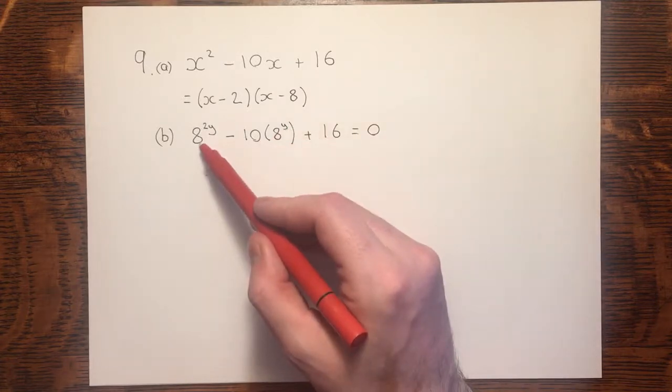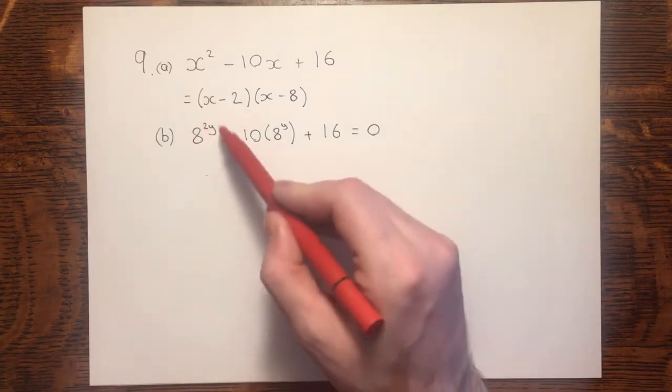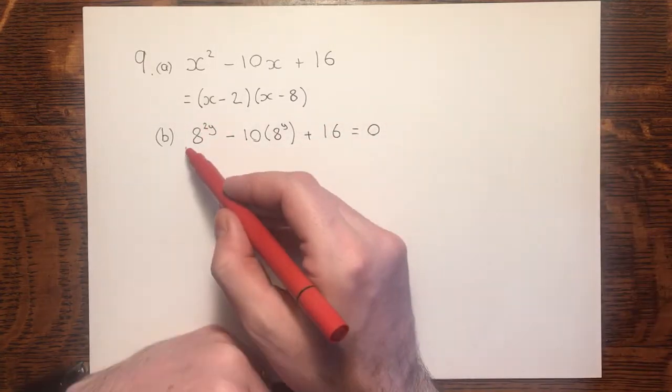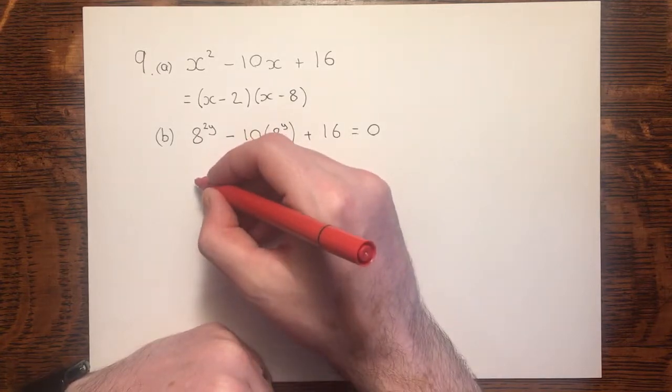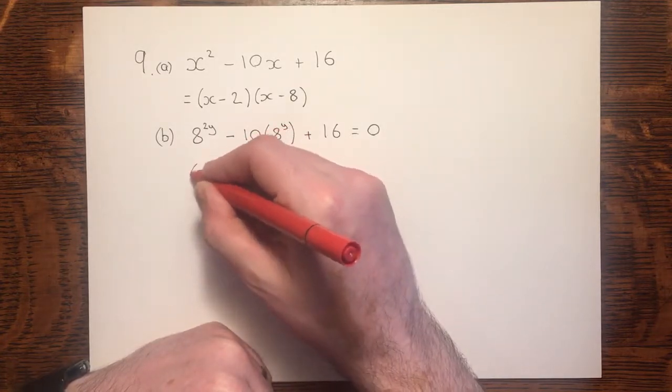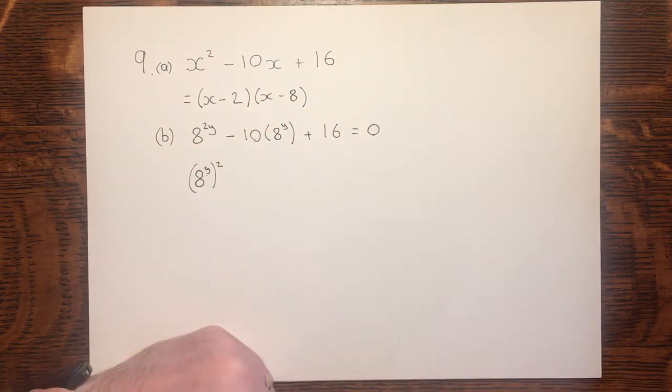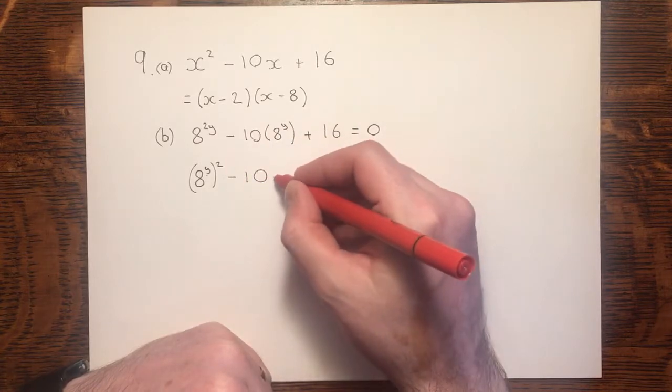Over here, though, we've got 8 to the power 2y. And this actually is the first thing that we need to tidy up. I can rewrite this term as 8 to the power y squared, because y times 2 would give me 2y. Continuing to write out the expression.